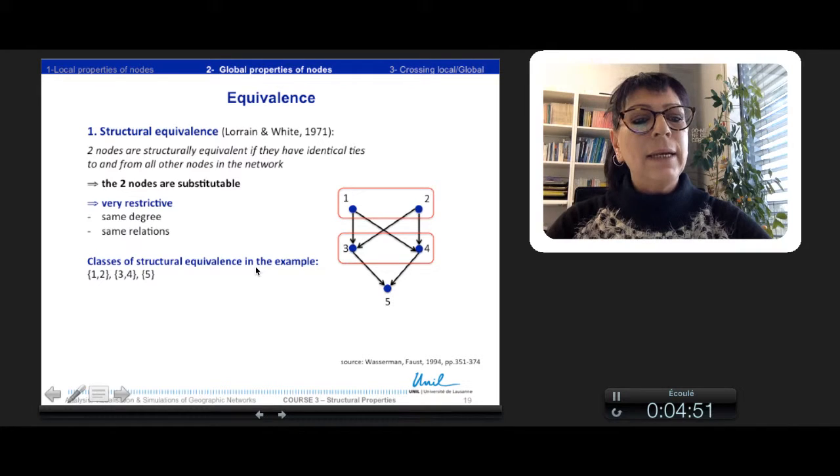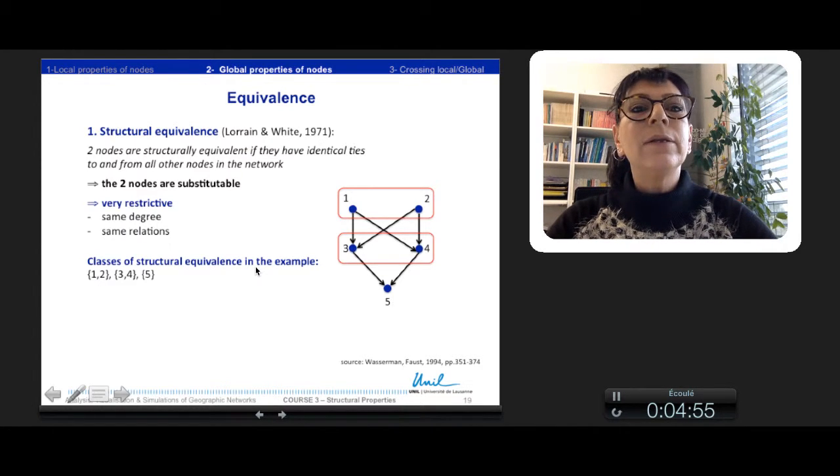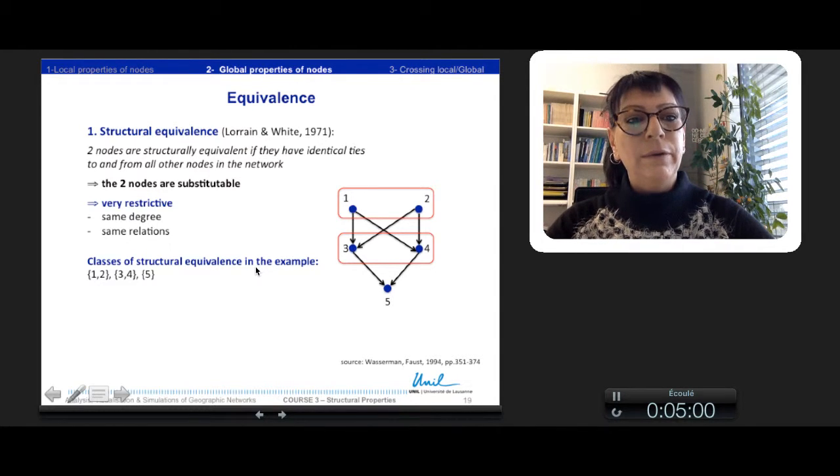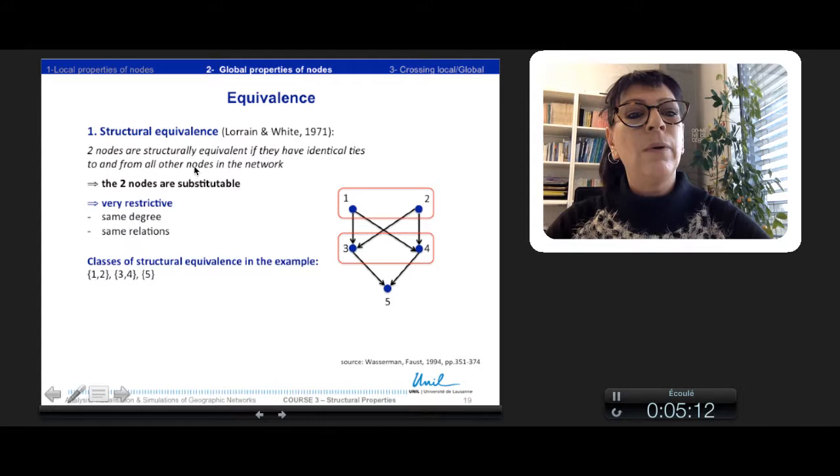Besides, equivalence property is very used in social network analysis. There are three kinds of equivalence. So first, the structural equivalence is considered for two nodes that are structurally equivalent, and they have identical ties to and from all other nodes in the network. So they have strictly the same relation and the same degree. The two nodes are very substitutable.